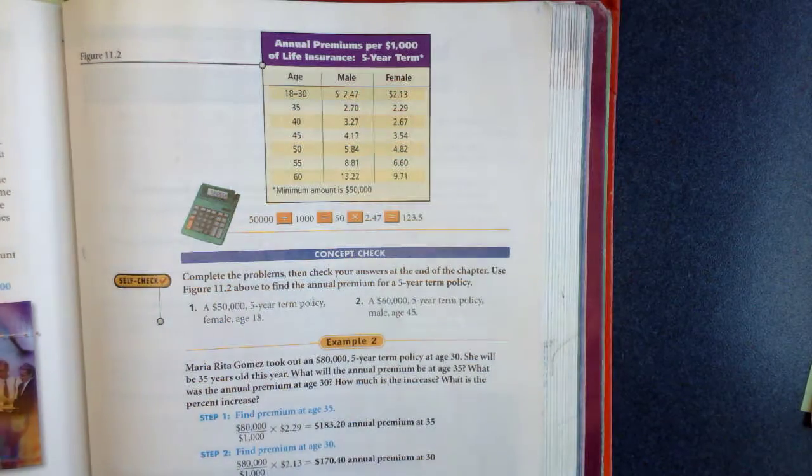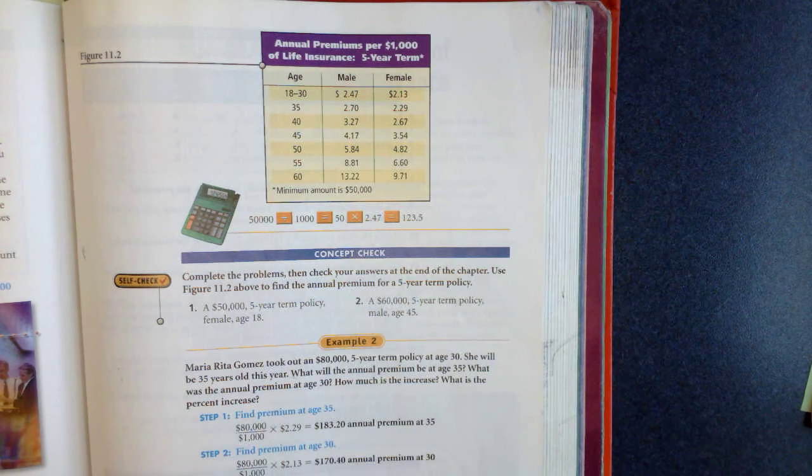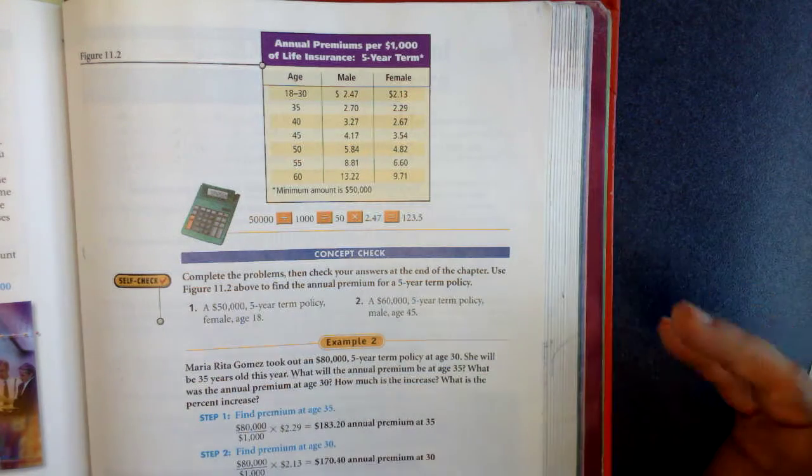In section three we're going to look into term life insurance. Term life insurance is a life insurance that's for a specific amount of time - two years, five years, ten years, something like that.